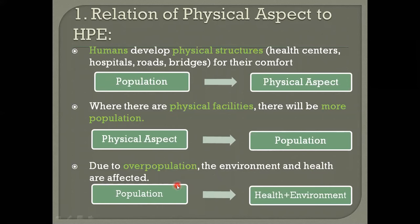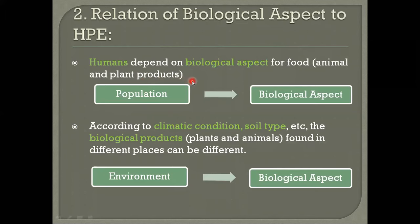Now the relation of the biological aspect to health, population, and environment. Humans depend on biological aspects for food — both animal products and plant products. All human beings depend on biological aspects for food such as vegetables, fruits, meat, and eggs, which we get from biological sources.